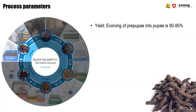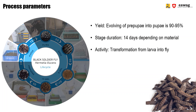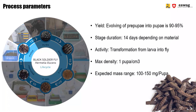The stage duration is the longest of all stages facilitated in the nursery. A total of 14 days is spent inside the dark cage for pupating — the transformation of a pupa into a fly — which is the main activity of this stage. The density in the pupation containers is about 1 pupa per cubic centimeter, and the expected mass range is around 100–150 mg per pupa. This is lighter than the pre-pupae weight because the pupae have consumed energy for the transformation into a fly.